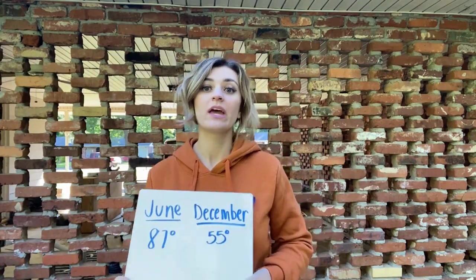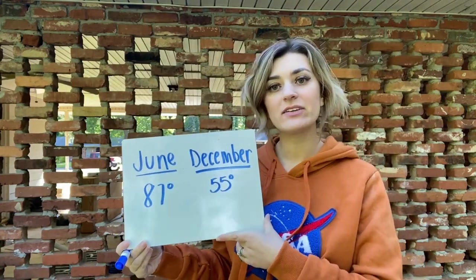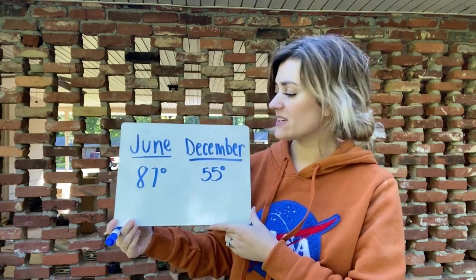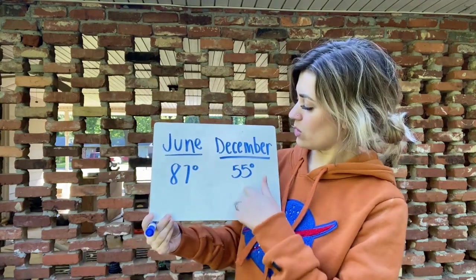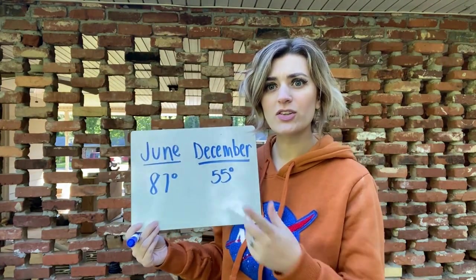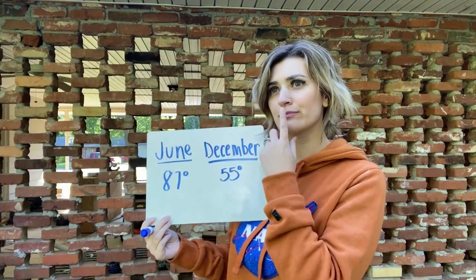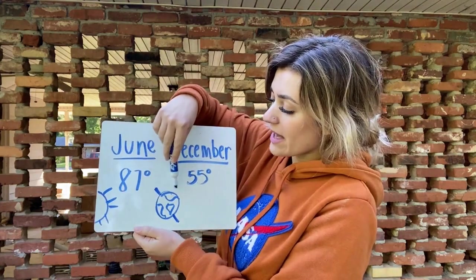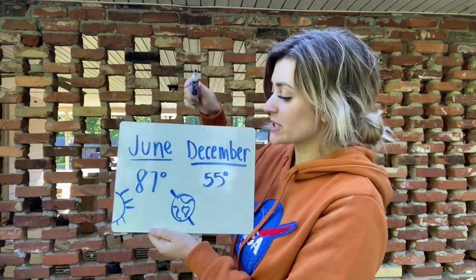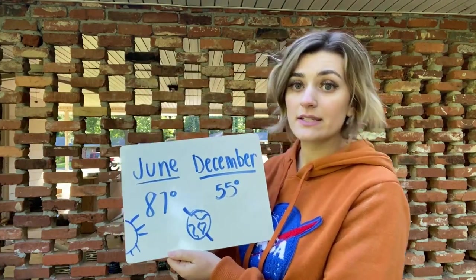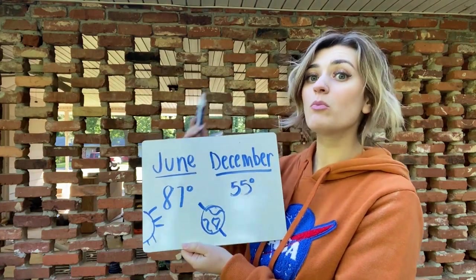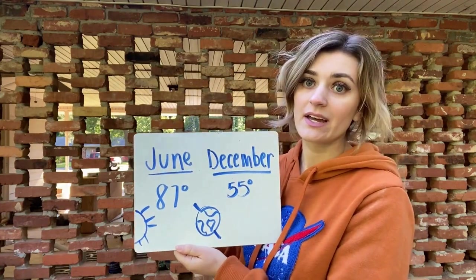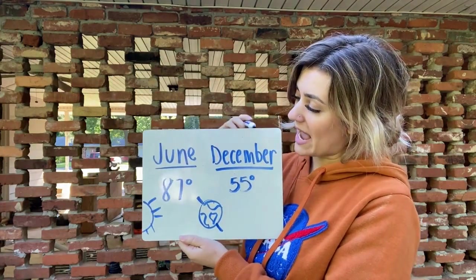Speaking of direct sunlight, let's talk about the average temperatures of Atlanta, Georgia. In Atlanta, the average temperature in June is about 87 degrees Fahrenheit, and the average temperature in December is about 55 degrees Fahrenheit. So why is it colder in December if the Earth is closer to the sun then? When we look at this picture, the northern hemisphere — where we are, where Georgia is — is tilted towards the sun in the summer, which means Georgia is getting more direct sunlight in the summer than in the winter. More direct sunlight causes an area to be warmer, which explains these average temperatures.